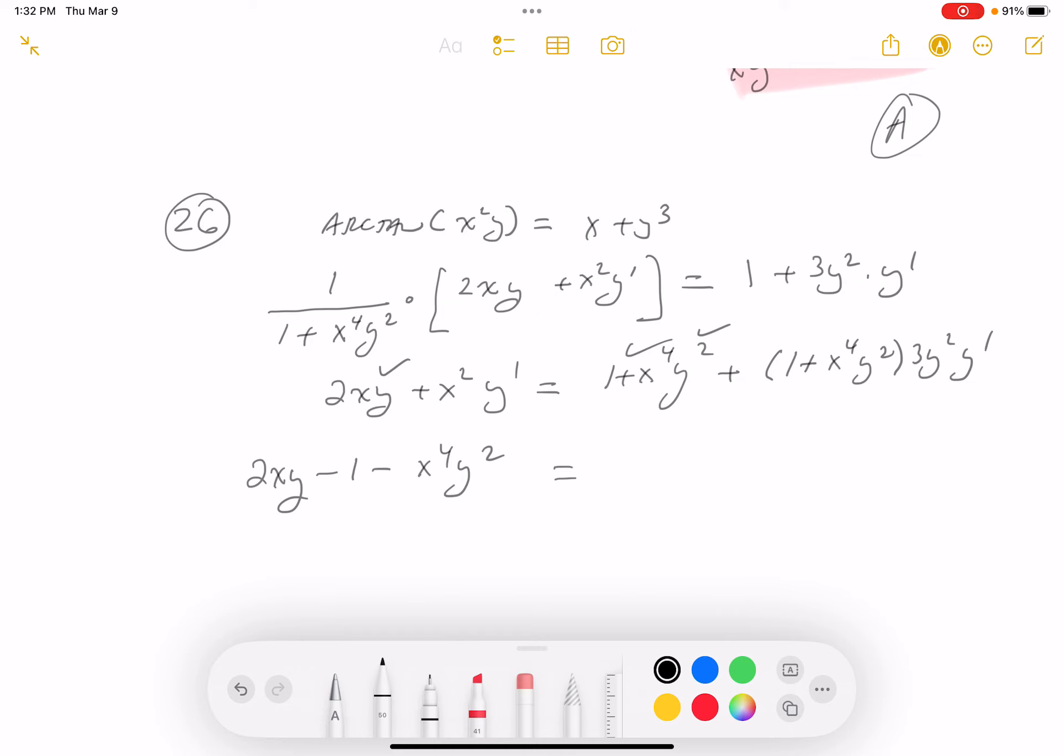Then when you get on the other side, I'm going to factor y prime out. And I'll do some multiplications as I do that, by the way. It's going to be this thing, which is 3y squared, let's see, plus 3x to the 4 y to the 4 minus this thing over here, which is x squared. And then we get y prime.